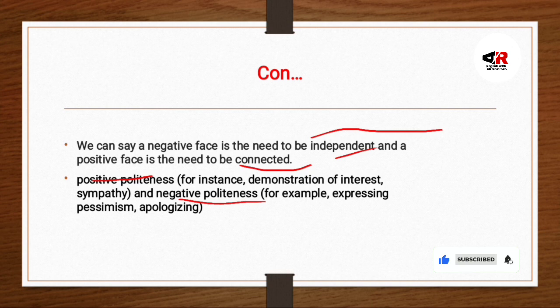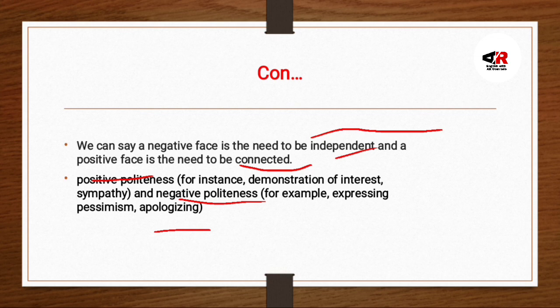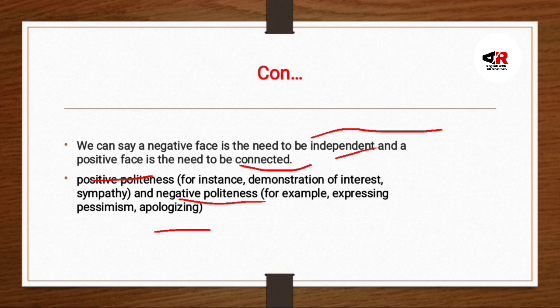Positive politeness aur negative politeness mein farq: positive politeness mein demonstration of interest aur sympathy hoti hai — hamdardi show karate ho. Negative politeness mein, for example, expressing pessimism and apologizing — jab aap kisi ka kaam nahi karte toh apologize karte ho ya aisi cheezein express karte ho jisse lage ke 'no, he is really busy.' That's what positive and negative politeness are. Thanks for watching — I hope this video has been helpful. Video pasand hai toh zaroor like, comment, share kijiyega. Milte hain next video mein, tab tak Allah Hafiz, take care of yourself.